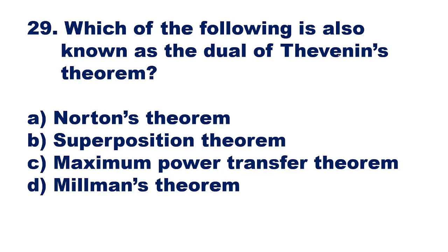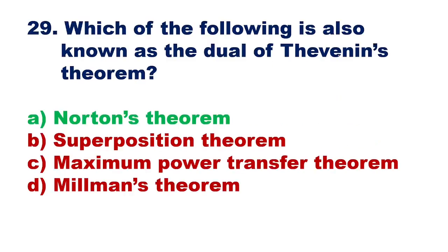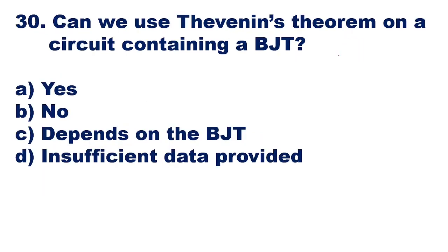Question 29: Which of the following is also known as the dual of Thevenin's theorem? The dual of Thevenin's theorem is Norton's theorem, so option A is the right answer. Norton's theorem is the dual because it finds short circuit current, which is the dual of the open circuit voltage found in Thevenin's theorem.